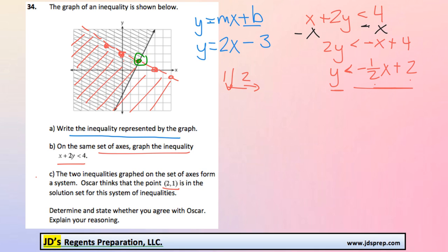Determine and state whether you agree with Oscar. Well, here's the problem. As we were just talking about, to satisfy this inequality, the point needed to be underneath this dotted line, not on it. If it was less than or equal to, then that would be no problem. But it just doesn't work. And we can also prove that.